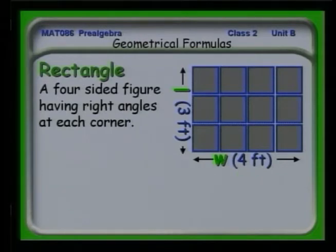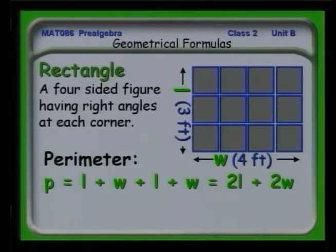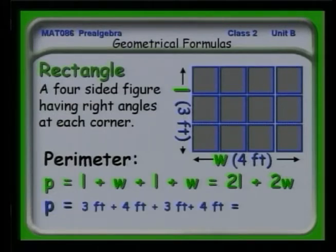We can talk about the perimeter of a rectangle, which is the length plus the width plus the length plus the width. Or we can add the length and the width together and get twice the length plus twice the width. In the case of this particular object with three feet and four feet, we find that the perimeter is 14 square feet.